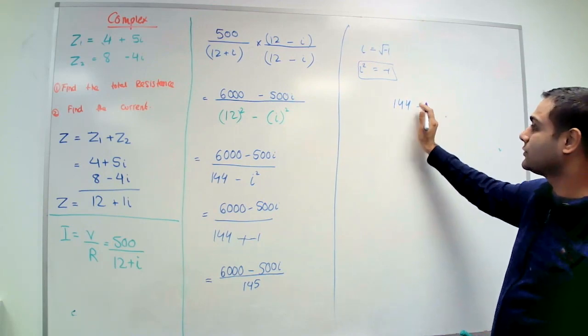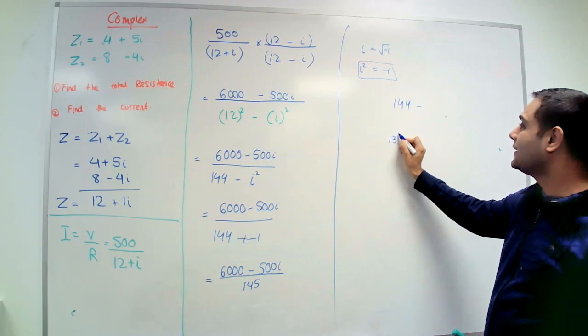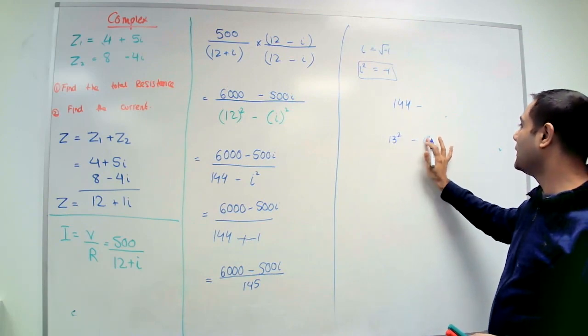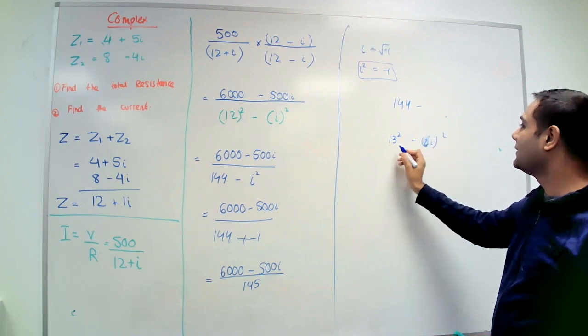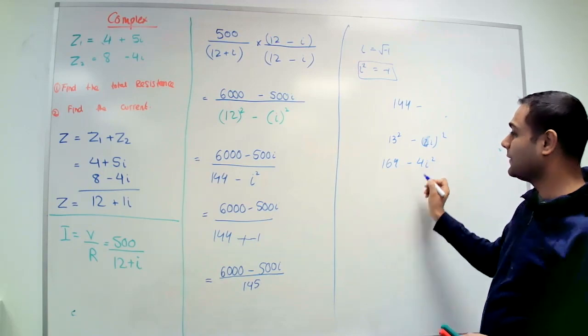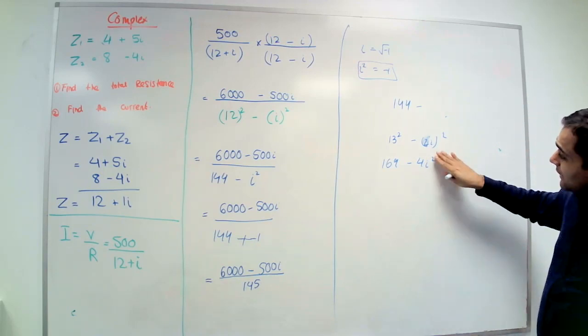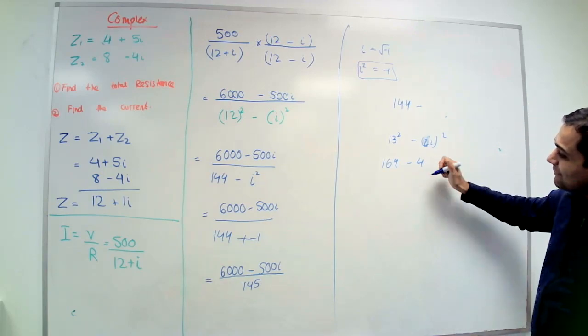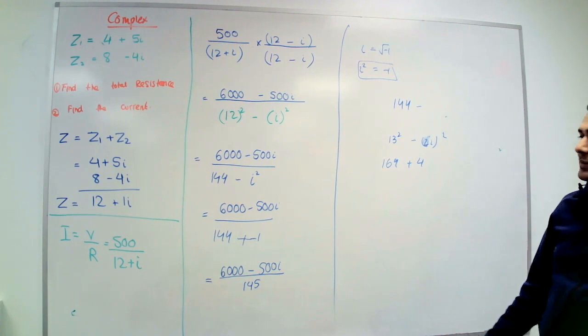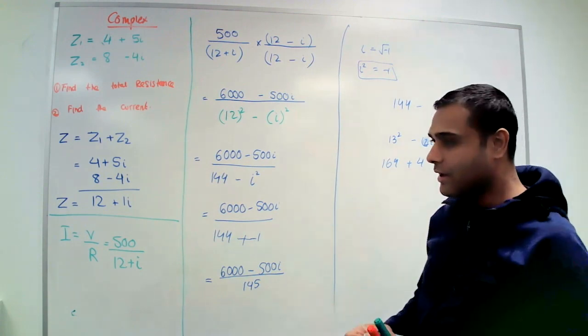In case if that was 144 minus, let's say, 13 squared minus 4i squared, that 13 is 169 minus that becomes 4i squared. The magic thing is if you want the i squared to disappear, just change that sign. Just remember that, easy. So we got that one.